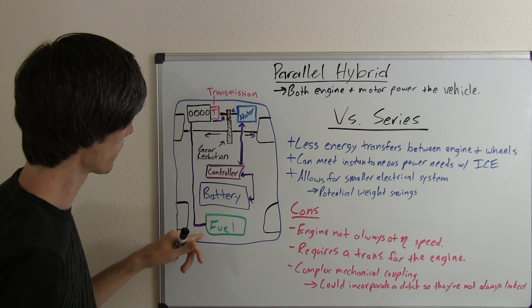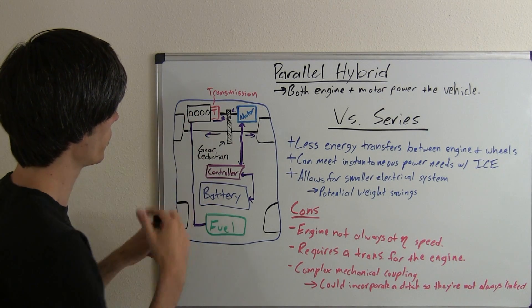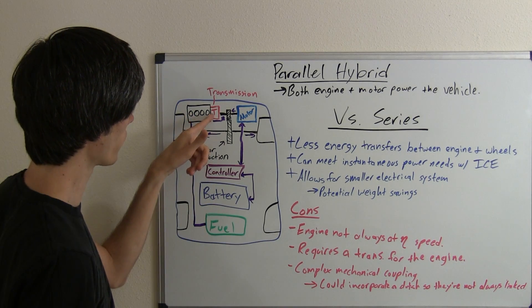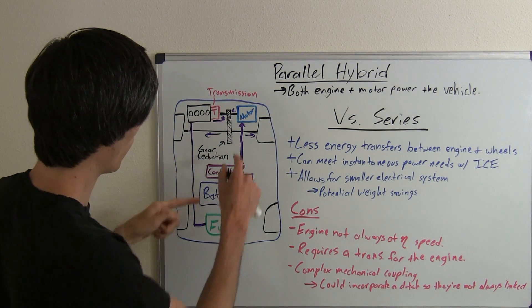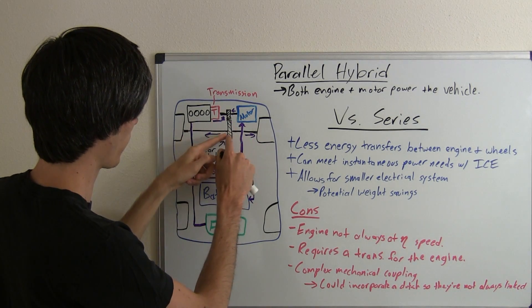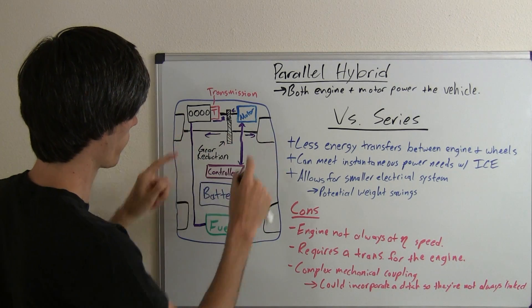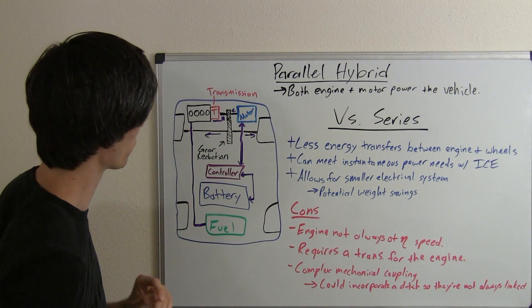You've got a fuel tank and that fuel tank sends fuel to your engine. Your engine then transfers this power through the transmission to a gear reduction, and these gears pass that power to the wheels, to the driving wheels. In this case it's a front-wheel drive vehicle.